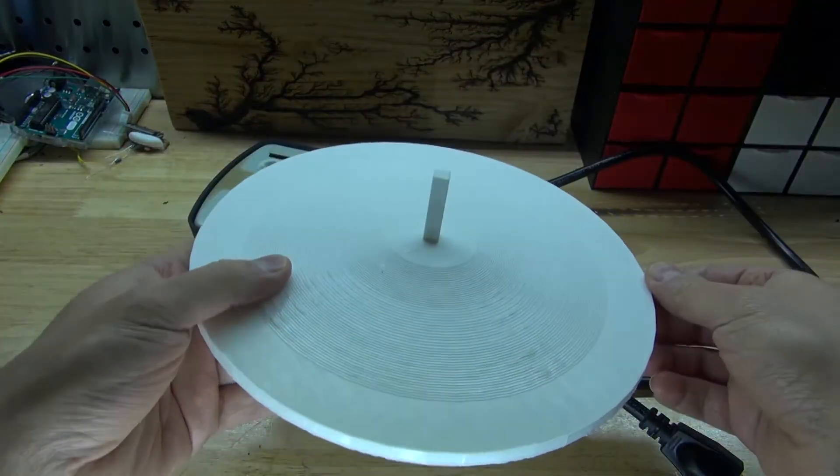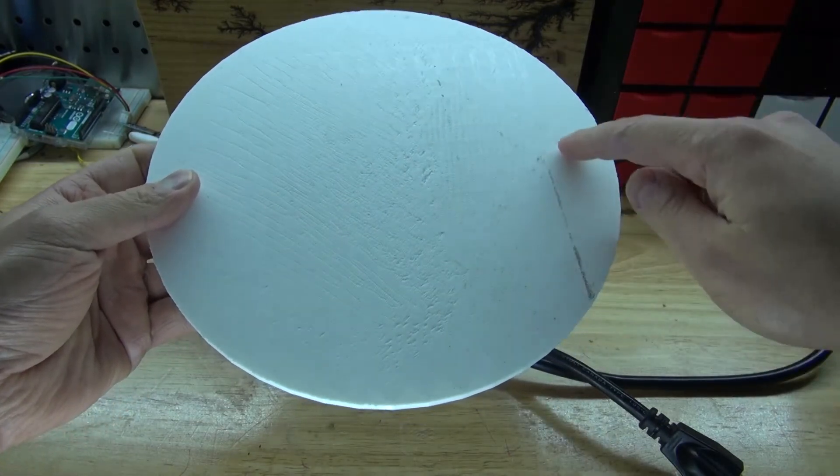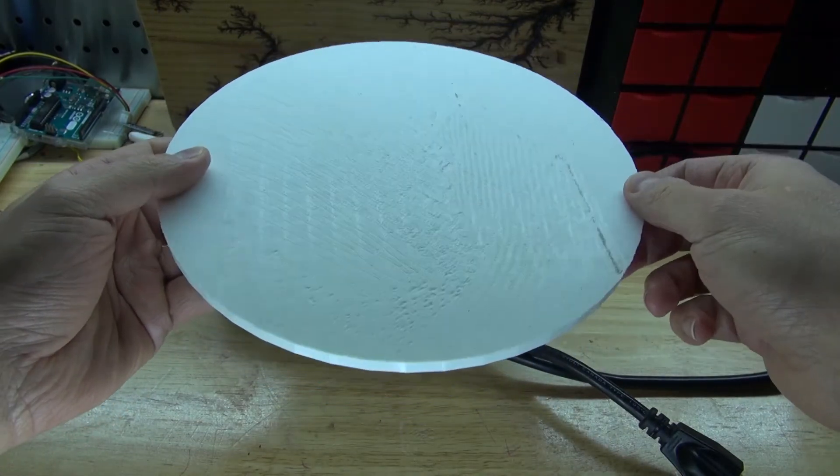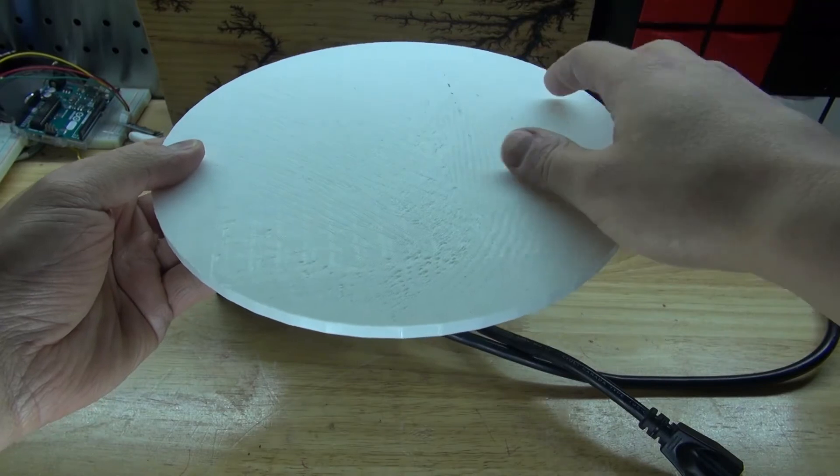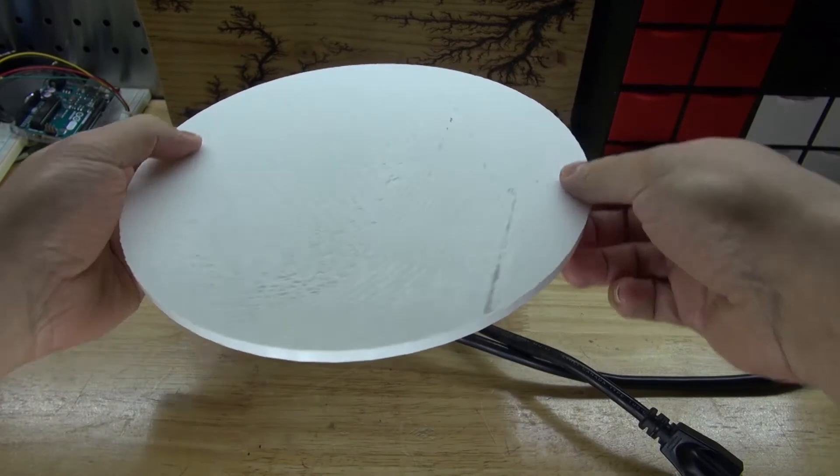And here it is, the rotating platter that I 3D printed. I wish the top was a little bit cleaner. I don't know how that mark got on there, but I don't really care too much. As long as I can have a smooth, flat top to put something on and have it rotate to display.